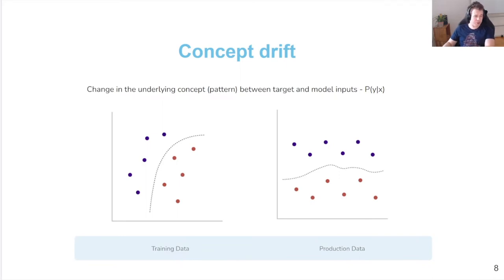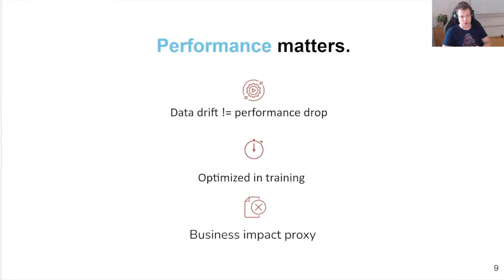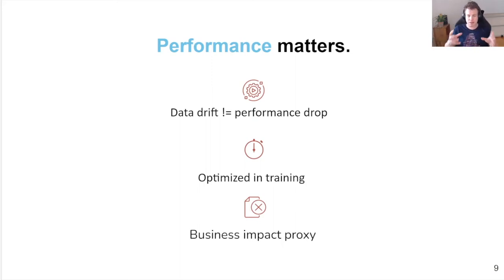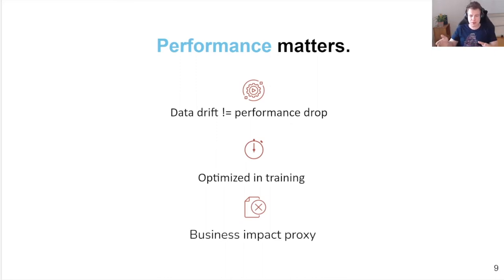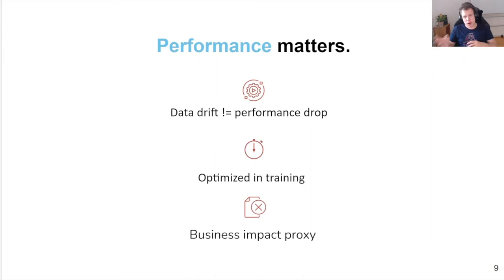I've mentioned performance quite a few times now, so let's talk about why we should really focus on it. Just detecting data drift is not enough because it does not always lead to a change in performance — the existence of data drift alone is not a strong signal for degraded performance. Another reason is that performance is what we optimize in training; we use it as a business impact proxy. As data scientists, our job is to maximize business impact with data and machine learning use cases. So now that we know the reasons why performance can degrade and why performance is really important, let's talk about how we can actually monitor it.